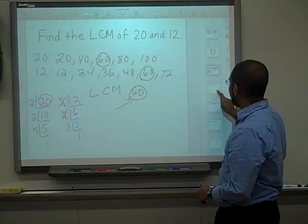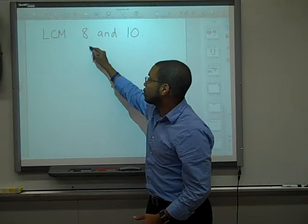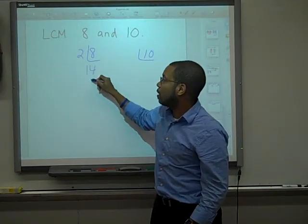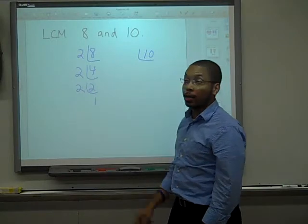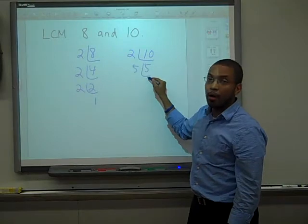Let's do another one. Find the least common multiple of 8 and 10. First, prime factor out 8 and 10. 2, 4, 2, 2, 2, 1. Prime factor out 10. 2, 5, 5, 1.